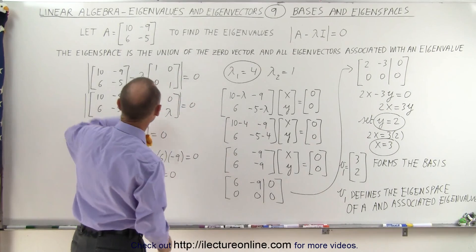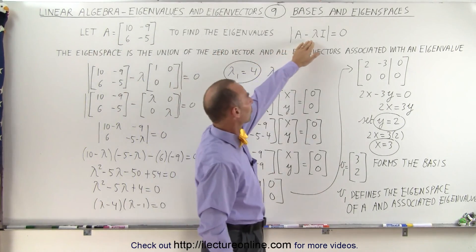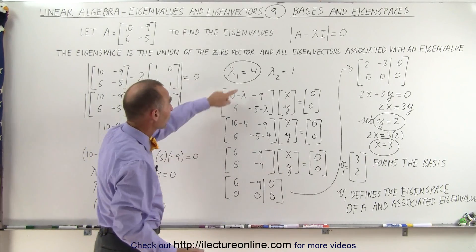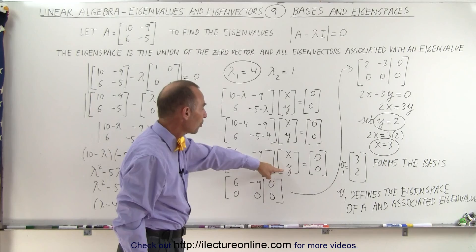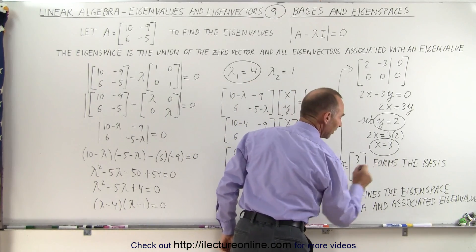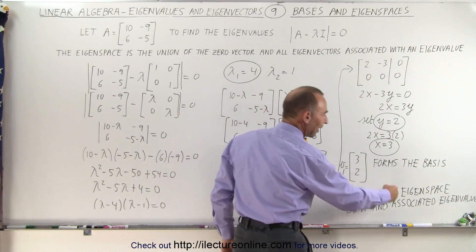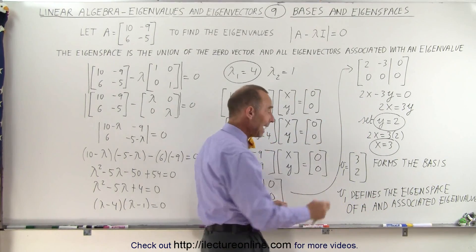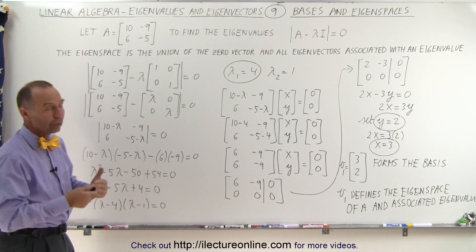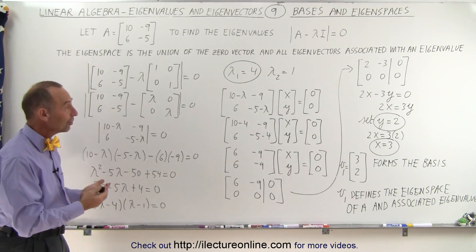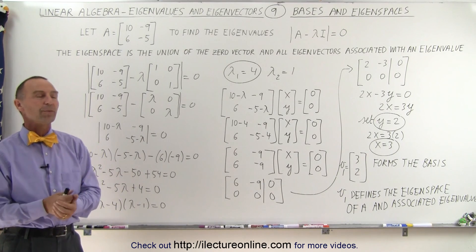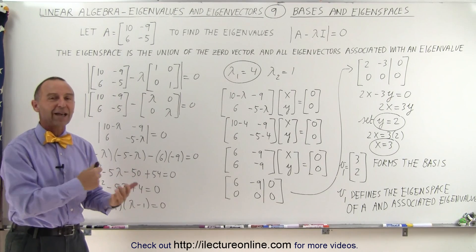Let's review. We started with matrix A and found the eigenvalues using the determinant principle. We then found two eigenvalues and picked λ₁ = 4. We used that value to find the eigenvector v₁ = [3, 2], which forms the basis. That basis then defines the eigenspace of A for the associated eigenvalue. That's the terminology we use regarding the basis, eigenspace, eigenvalues, and eigenvectors of a matrix. In the next several videos, it'll become clearer as we see how we actually use those principles.